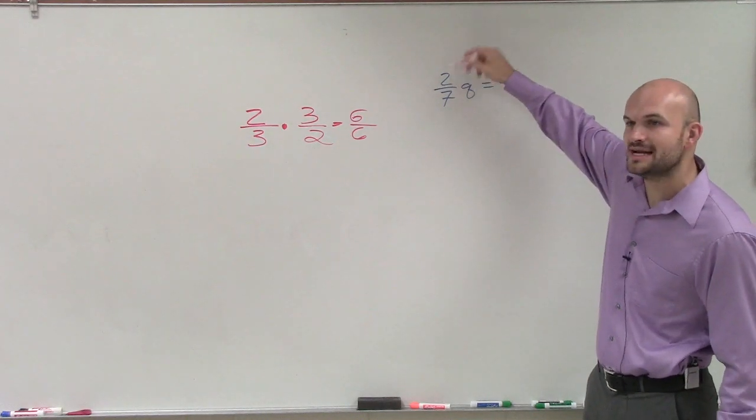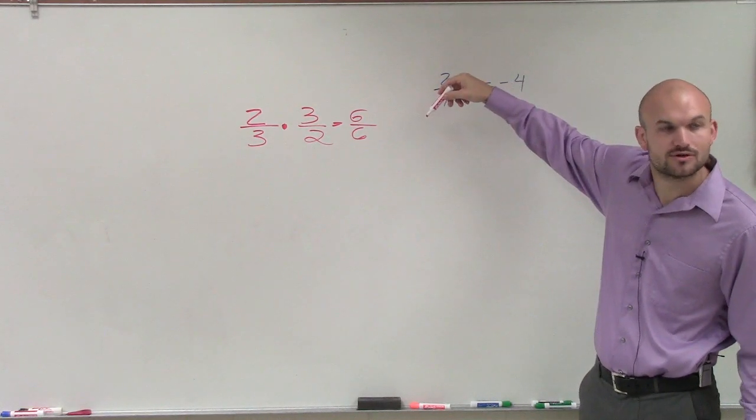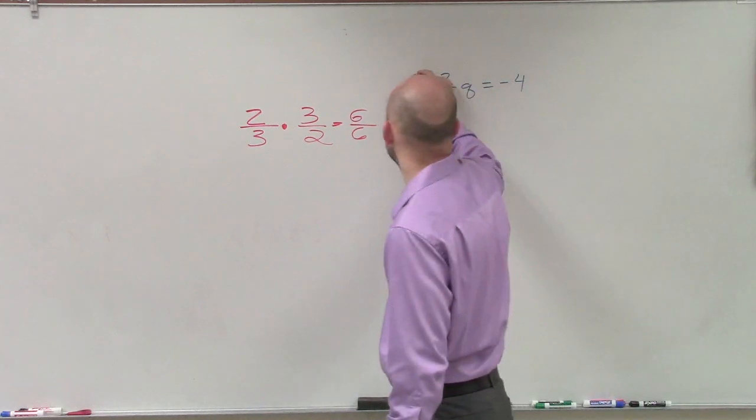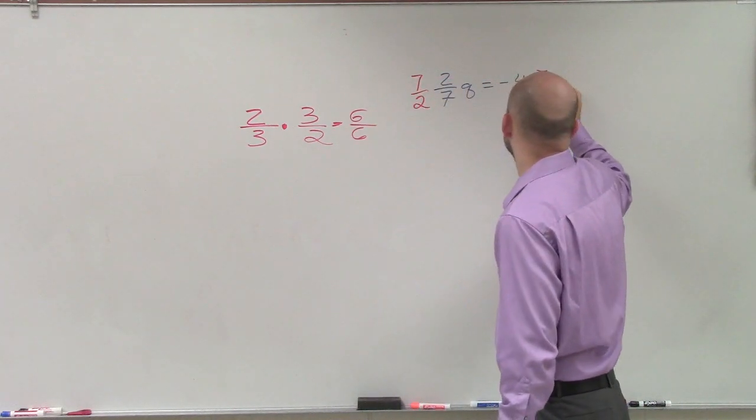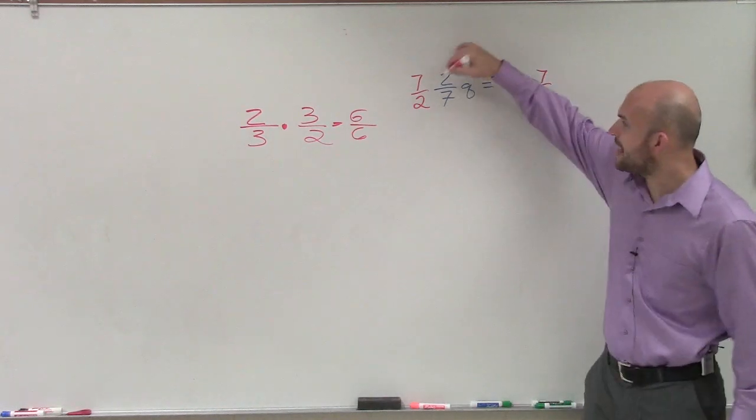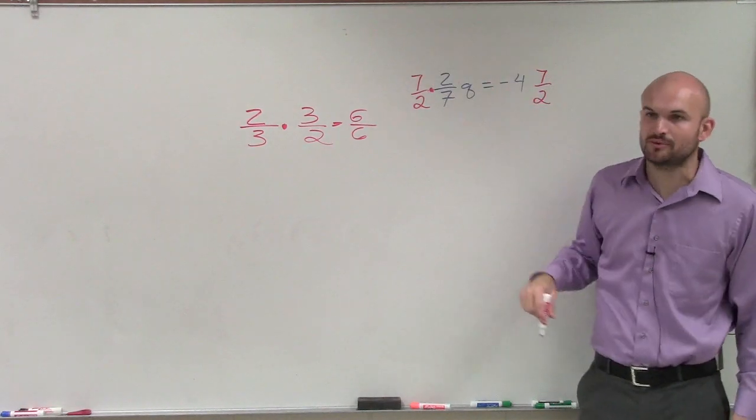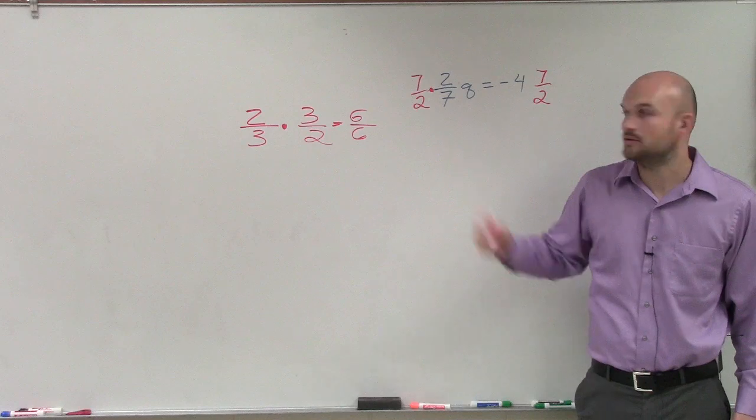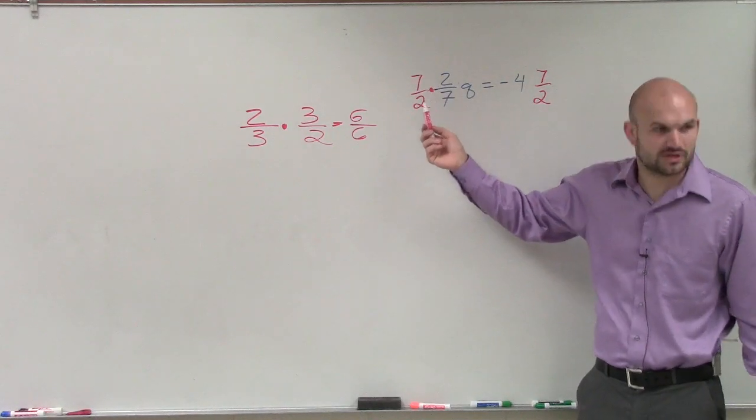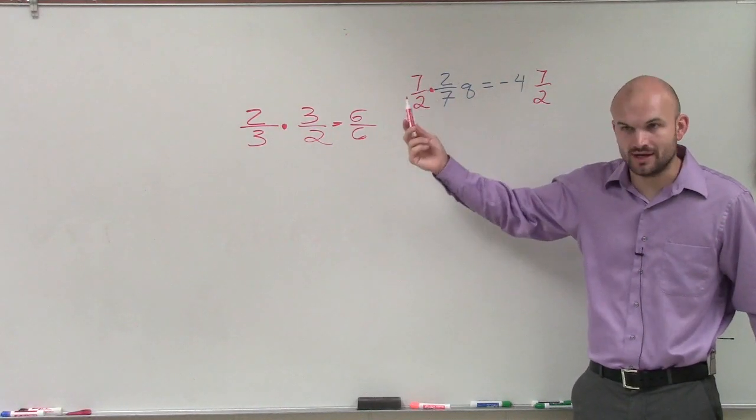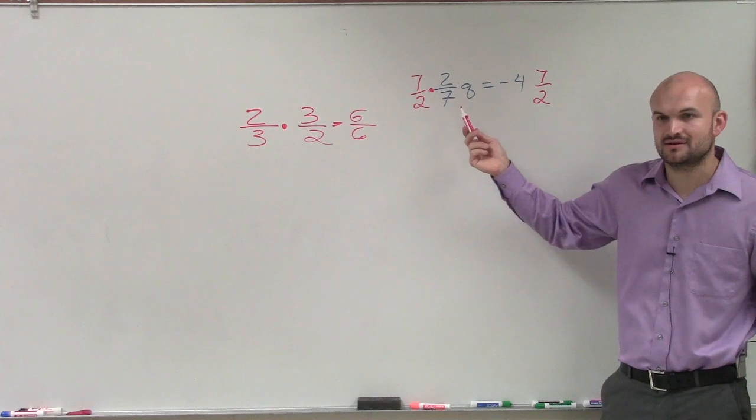So what I need to do is I need to get rid of the 2 sevenths. So what I can do is multiply by the reciprocal. So what happens when I multiply this number by its reciprocal? It goes to 14 over 14, which is 1. And then 1 times q is q.